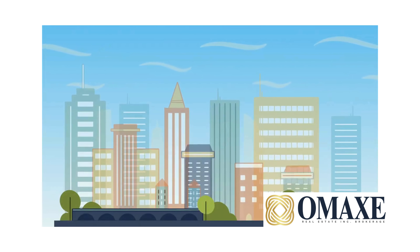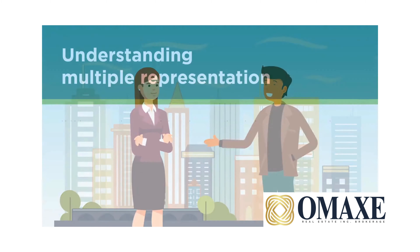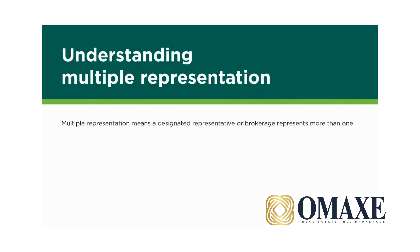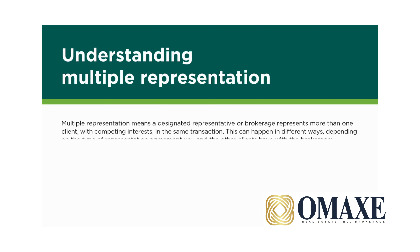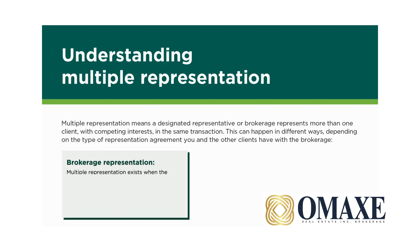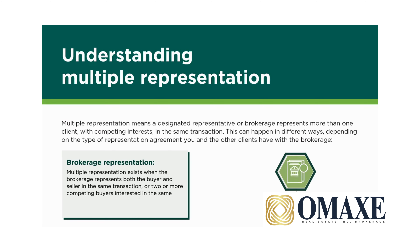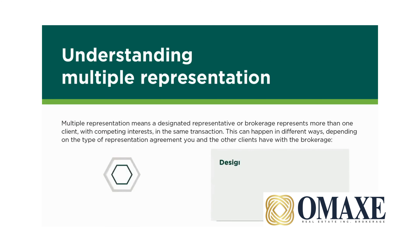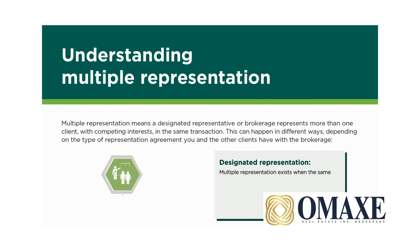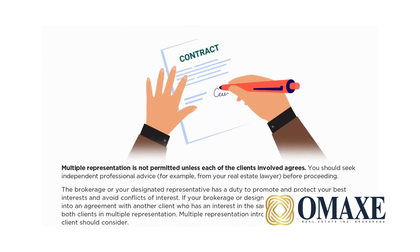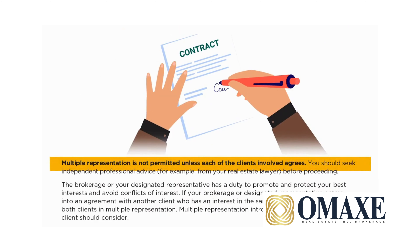After reviewing your agreement, if you have any questions, be sure to consult with your real estate agent. Now, let's talk about multiple representation. This occurs when the same agent or brokerage represents more than one client in the same transaction. It's crucial to understand the implications and risks. Under brokerage representation, multiple representation exists when the brokerage represents both the buyer and seller in the same transaction. Under designated representation, multiple representation exists when the same agent is the designated representative for both the buyer and the seller in the same transaction. Multiple representation is not permitted unless each of the clients involved agrees to it, and it is recommended that you seek independent professional advice before proceeding.